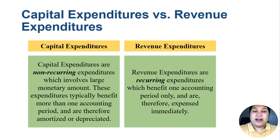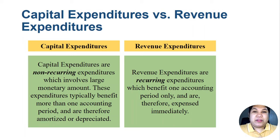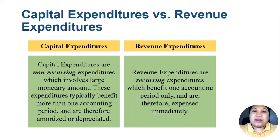Revenue expenditures are recurring expenditures which benefit only one accounting period and are therefore expensed immediately. In contrast to capital expenditures, revenue expenditures are recurring, usually involve small amounts of money, and benefit only one accounting period. For example, paying salaries of staff, spending on office supplies, or paying utilities — these are incurred regularly, typically every month.